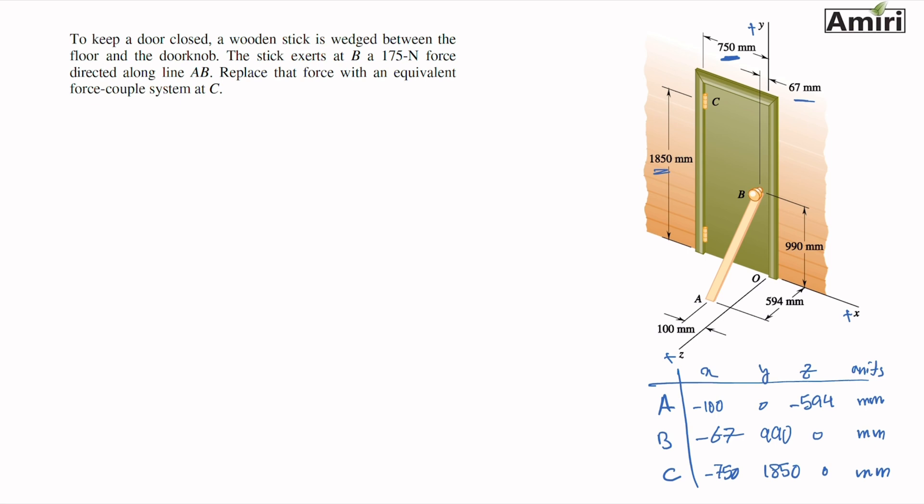FAB is magnitude of FAB times unit vector of AB. It is also magnitude of FAB times position vector AB over magnitude of position vector AB. So the magnitude is 175 newtons. Position vector A to B is - you've got to subtract coordinates of B from A. I've done a lot of examples on this and there is a lecture on position vectors, so please go back if you want to know more about it.